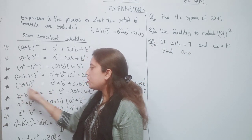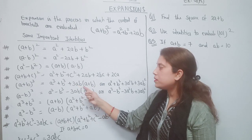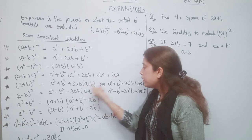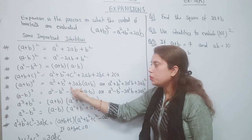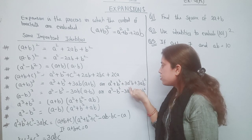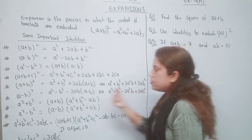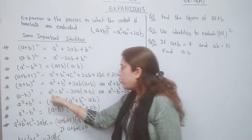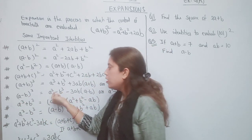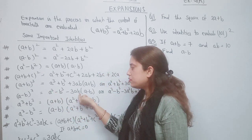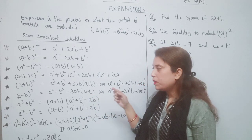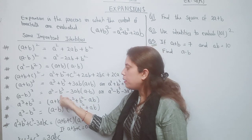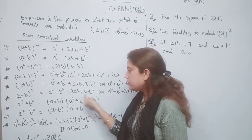The fifth identity: (a+b)³ = a³+b³+3ab(a+b), or when we open the bracket it becomes a³+3a²b+3ab²+b³. Similarly, (a-b)³ = a³-b³-3ab(a-b), and when we open the bracket it becomes a³-3a²b+3ab²-b³.